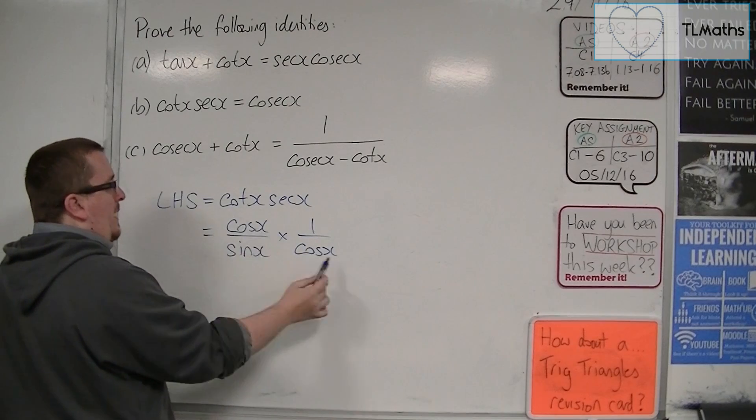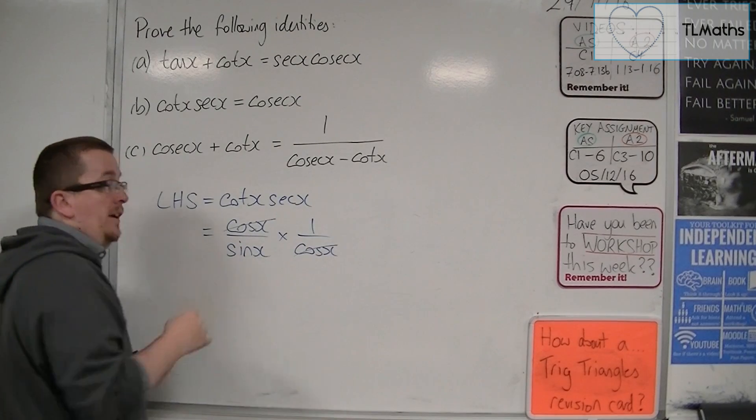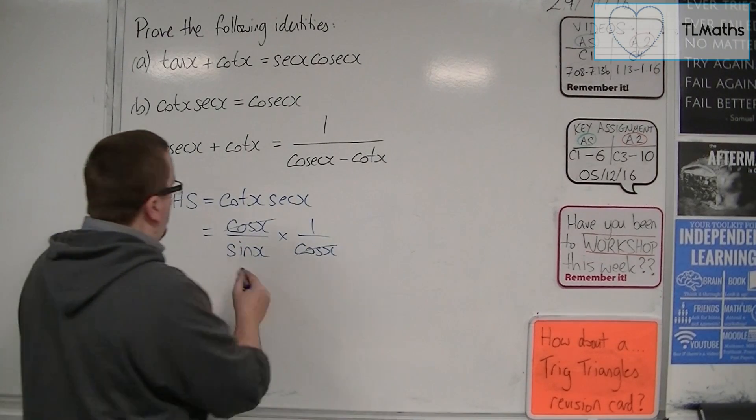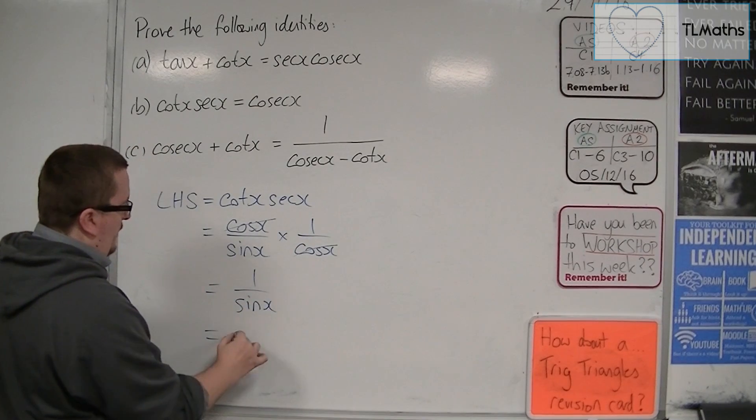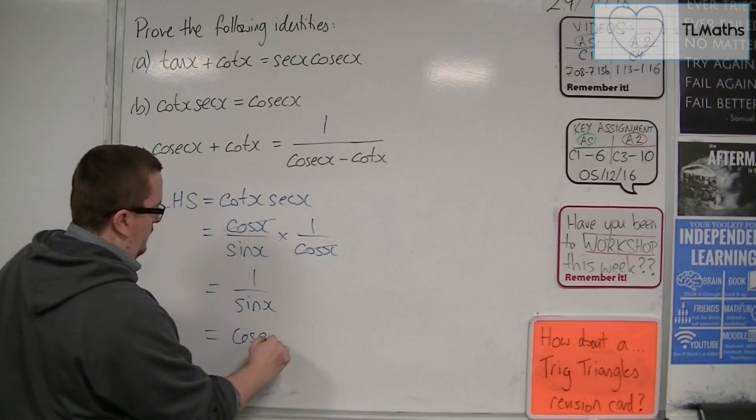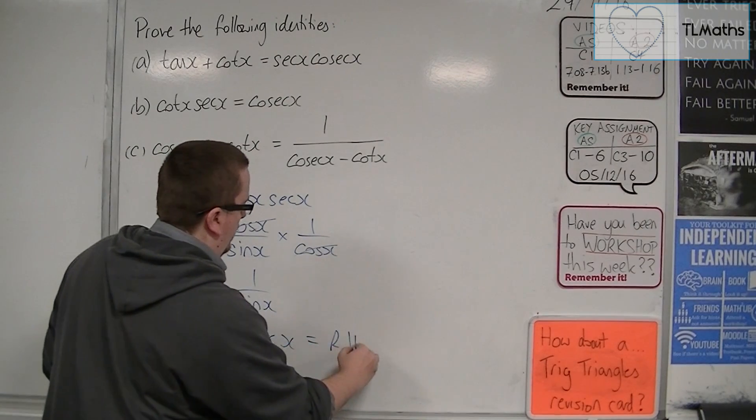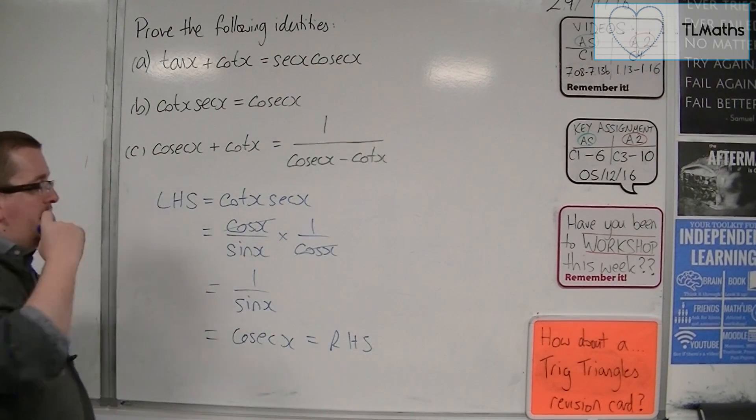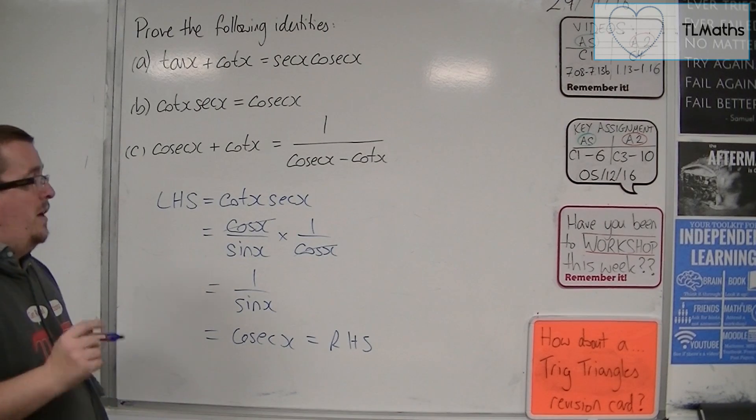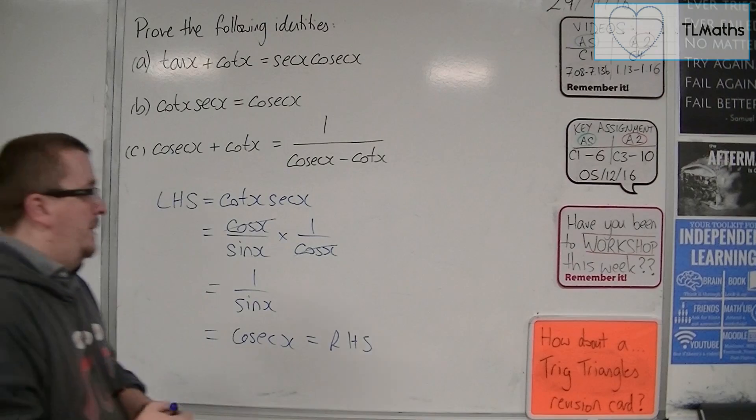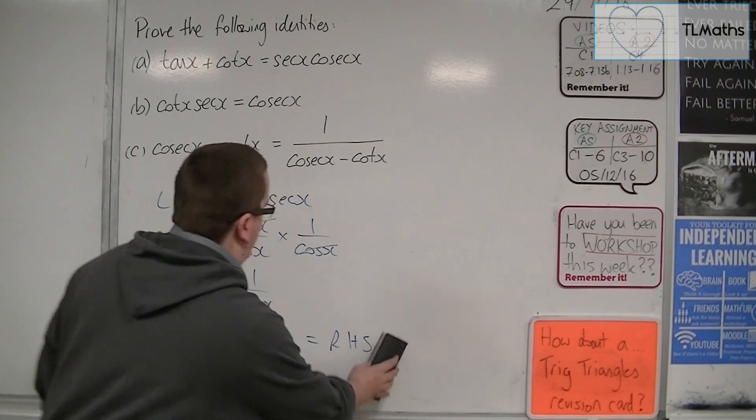Here we can quite clearly see that the cosines are going to cancel, leaving me with one over sine. And that's just cosec. And that's the right-hand side. So some of these, as you can see, are quite straightforward. Some are more fiddly than others, however, as we will see with this next example.